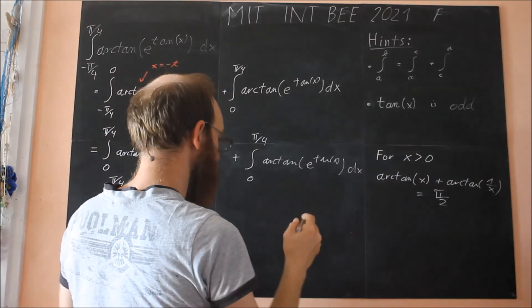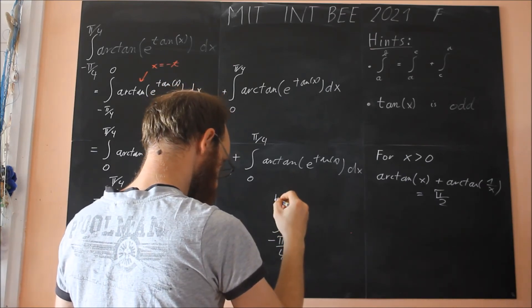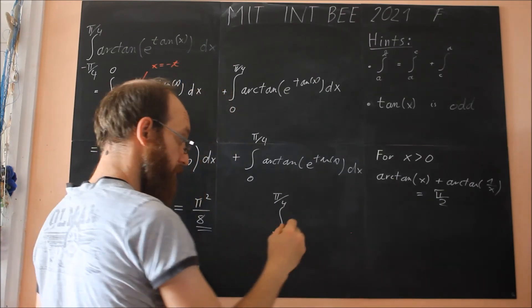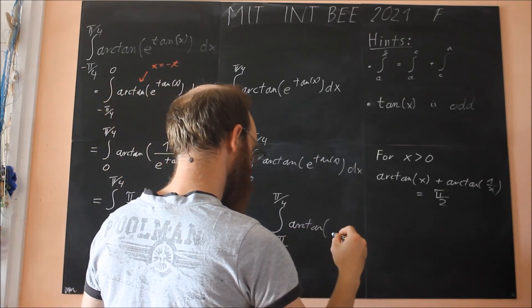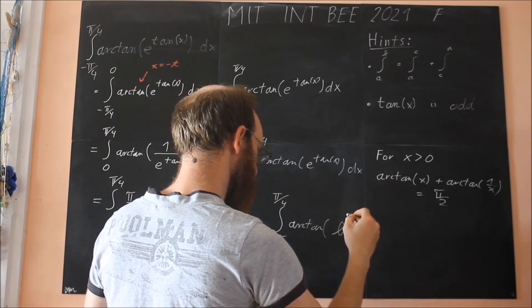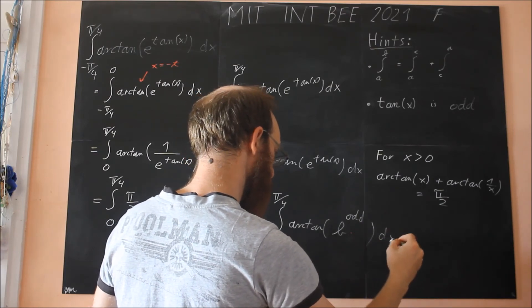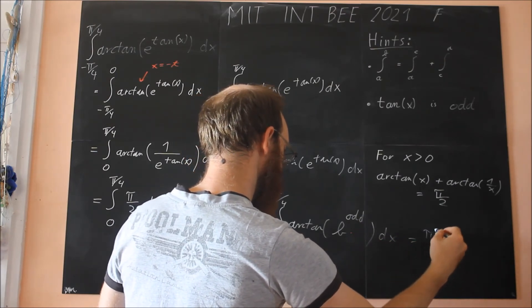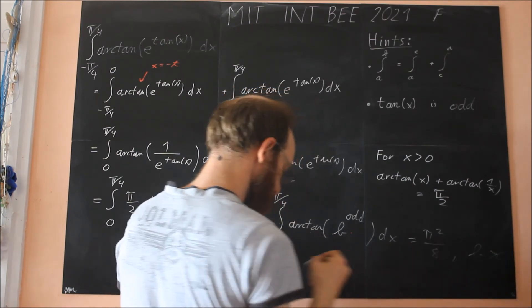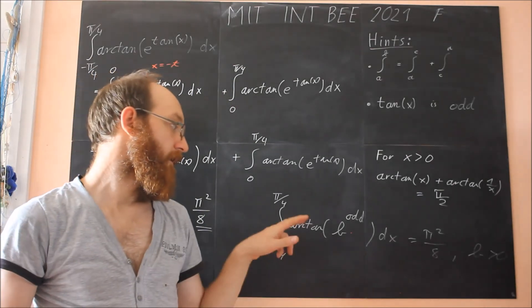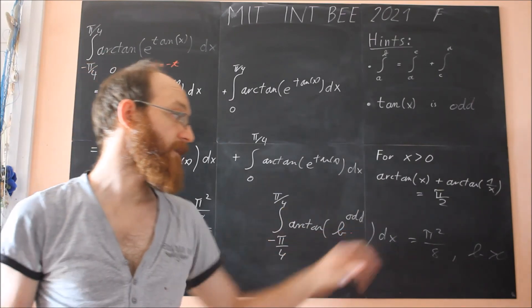And I just want to write it down, even for this integral, from minus pi over four up to pi over four, inverse tangent of some base to an odd function, is also pi squared over eight, where the base is positive. So you can think of that. Arctangent of b to an odd function will give the same result.